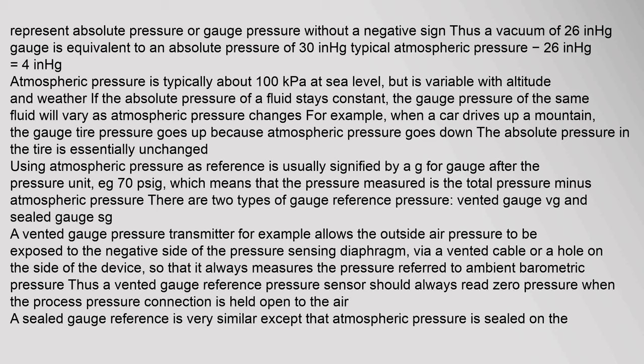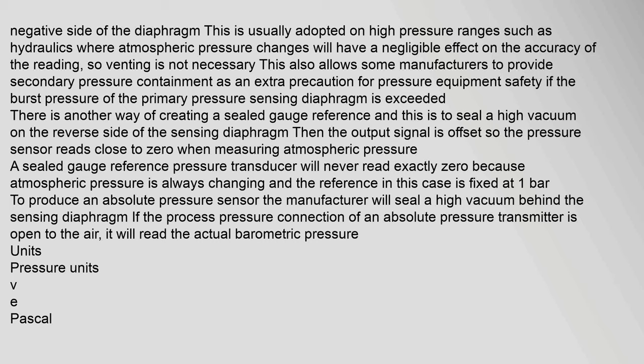Using atmospheric pressure as reference is usually signified by 'g' for gauge after the pressure unit, e.g. 70 psig, which means the pressure measured is the total pressure minus atmospheric pressure. There are two types of gauge reference pressure: vented gauge (Vg) and sealed gauge (Sg). A vented gauge pressure transmitter allows the outside air pressure to be exposed to the negative side of the pressure sensing diaphragm via a vented cable or a hole on the side of the device, so that it always measures the pressure referred to ambient barometric pressure. A vented gauge reference pressure sensor should always read zero pressure when the process pressure connection is held open to the air. A sealed gauge reference is very similar except that atmospheric pressure is sealed on the negative side of the diaphragm, usually adopted on high pressure ranges such as hydraulics, where atmospheric pressure changes have a negligible effect on accuracy, so venting is not necessary.